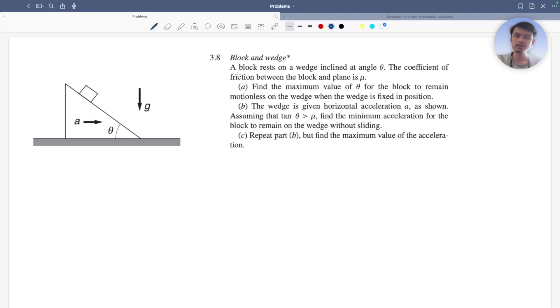What the problem says is that a block rests on a wedge that is inclined at an angle theta and the coefficient of friction between block and the plane is mu. So here there is a coefficient of friction that is mu. In problem number one, part A, find the maximum angle theta for the block to remain motionless on the wedge when the wedge is fixed in position.